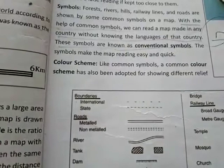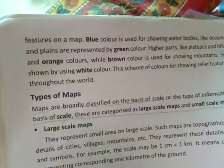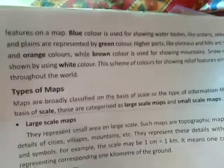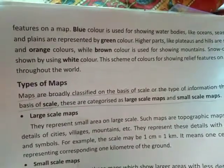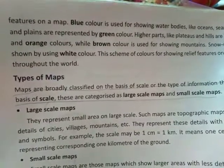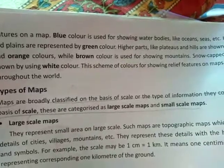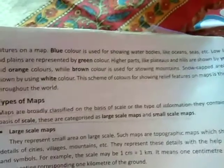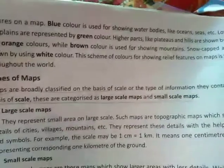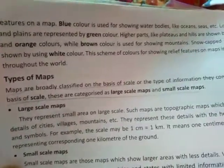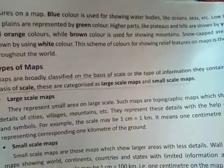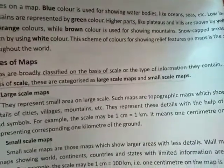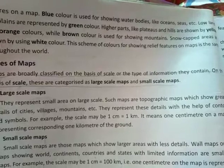Now we have color scheme. You must have seen maps in different colors. Like common symbols, a common color scheme has also been adopted for showing different relief features on the map — meaning mountains, plateaus, plains, and water bodies. Blue color is used for showing water bodies like oceans and seas. Low lands and plains are represented by green color — areas that are below sea level are shown in green.